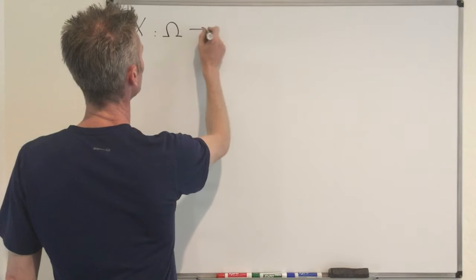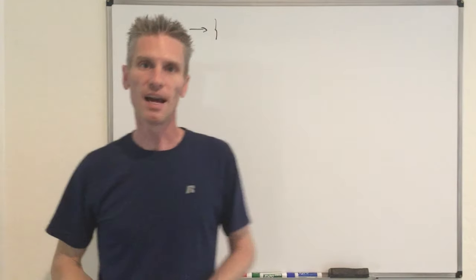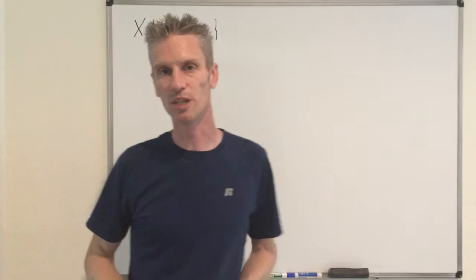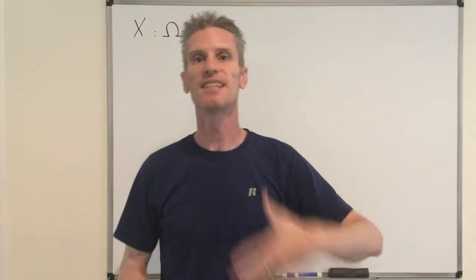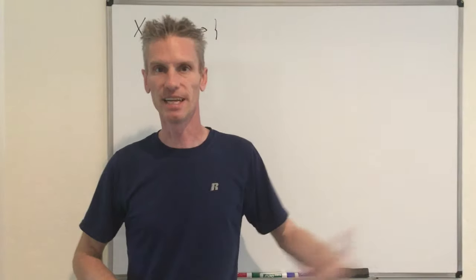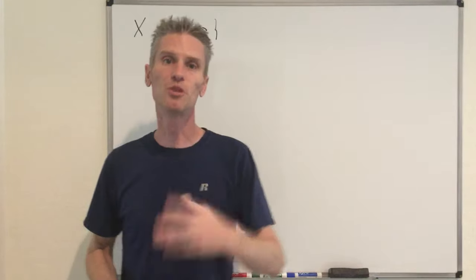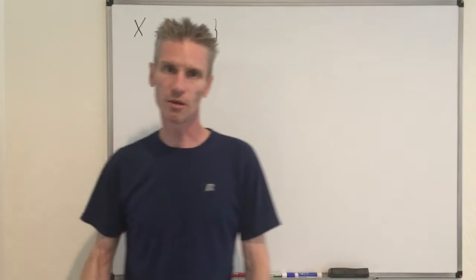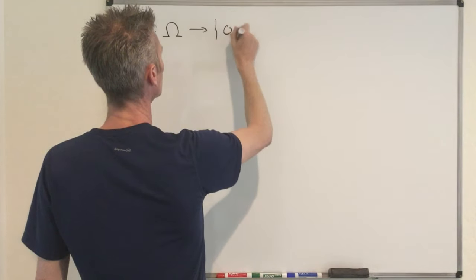This random variable is going to take values as follows: if player one has a smaller number than player two, then player one is going to lose from the beginning, so it's going to win zero times. At the opposite, if player one has the largest number, this player is going to win against everybody else — there are four other players — so player one can win up to four times.